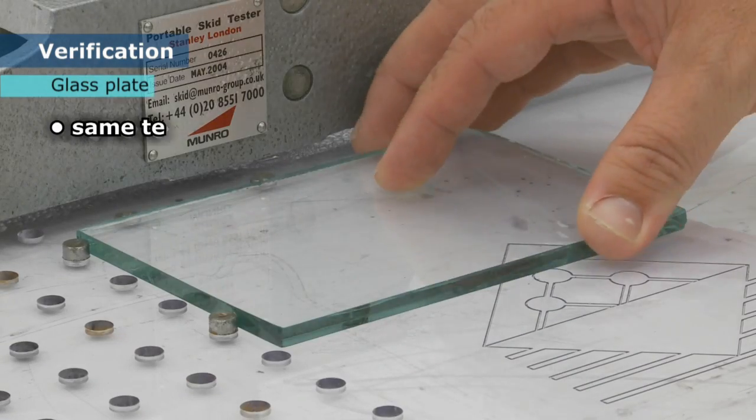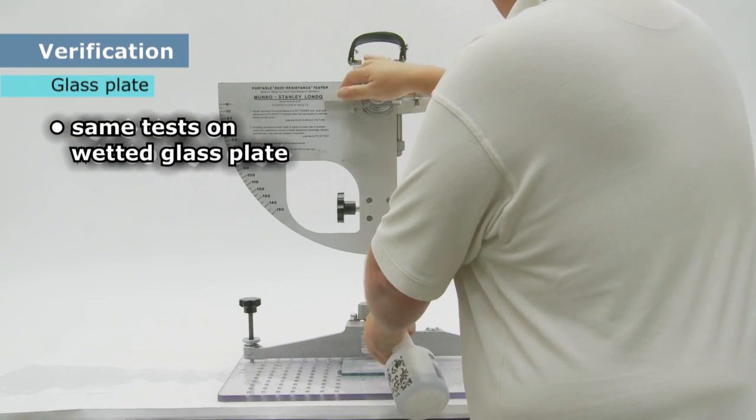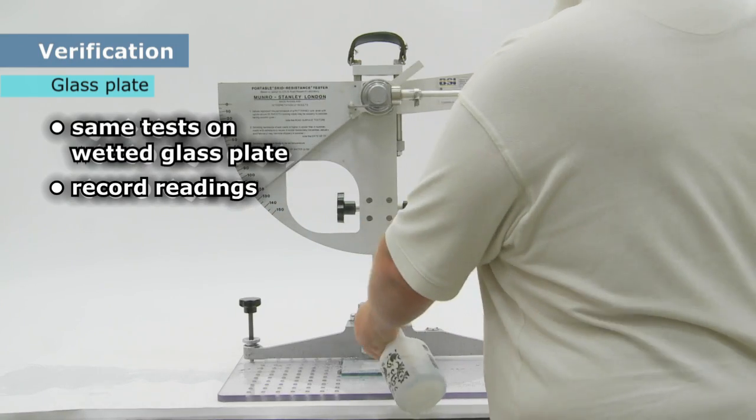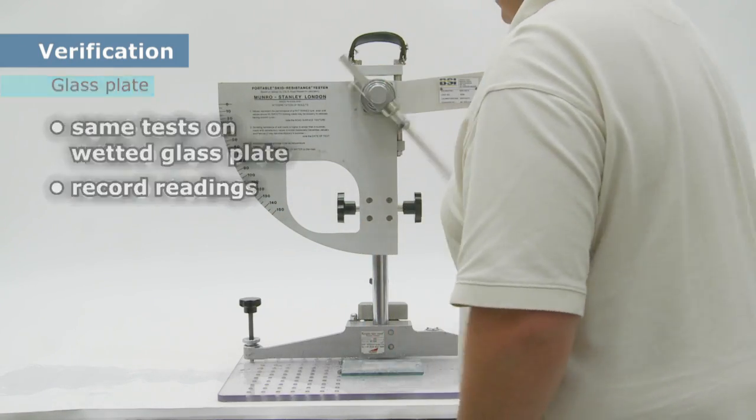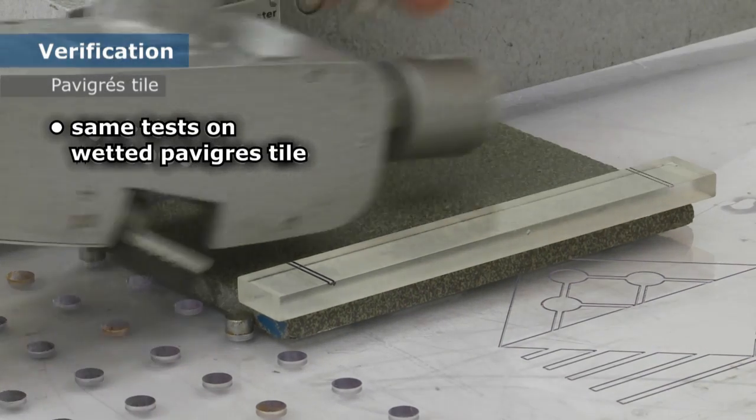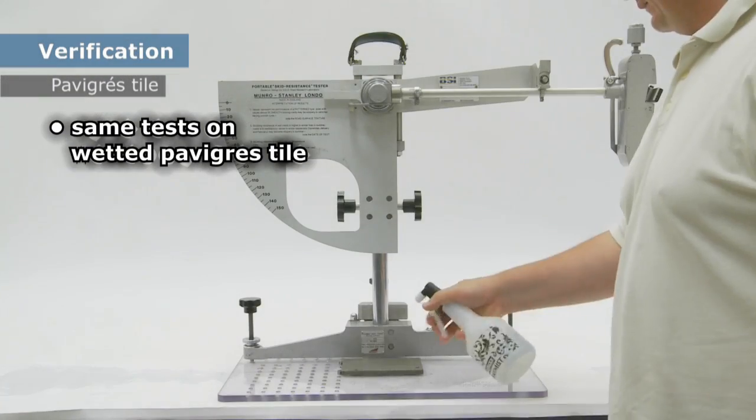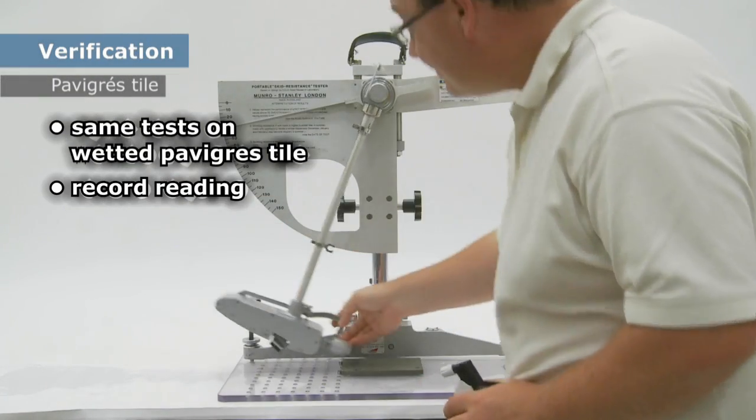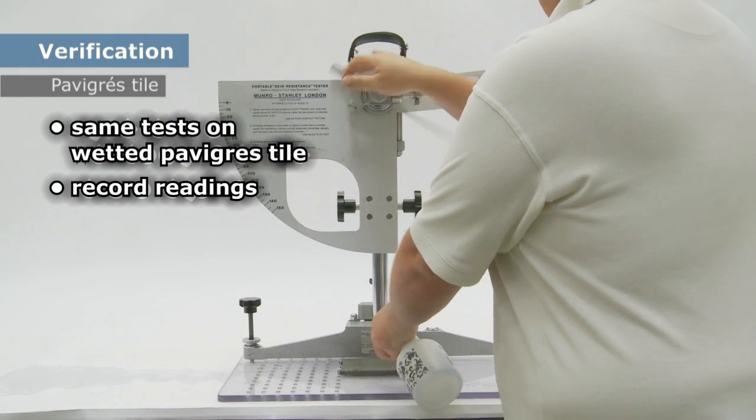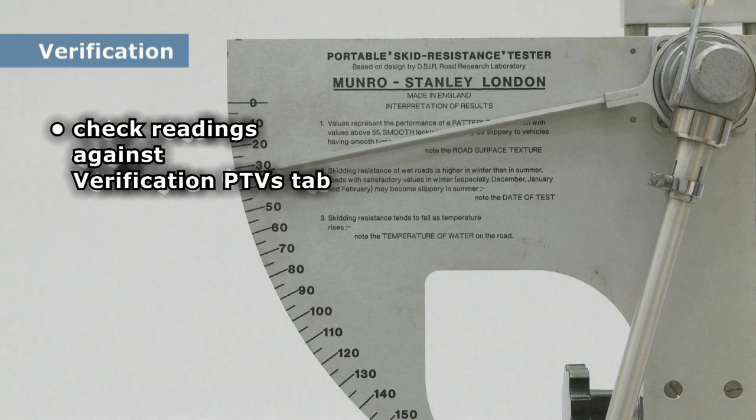Follow the same testing sequence on the glass plate and then the pavigrese tile, recording all the numbers. Check your readings for each of the test materials against the verification PTVs table number 3 in the guidelines document.